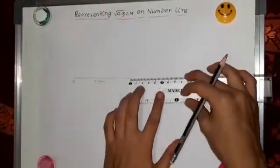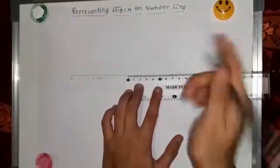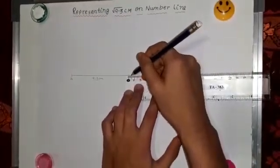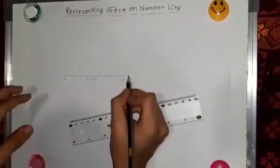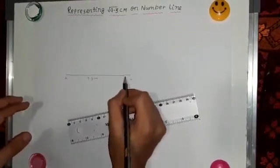Now from B, extend the line only for 1 cm. Not more than that. 1 cm. And name it C.